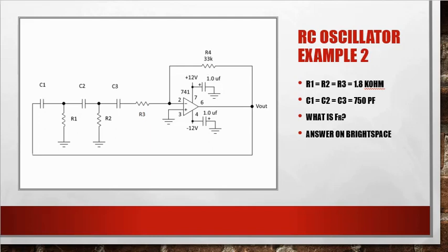RC oscillator example number two. R1 equals R2, R3, and they're equal to 1.8k ohms. C1 equals C2 equals C3, and that's equal to 750 picofarad. What is the frequency of resonance for the circuit? The answer is again on Brightspace. It'll be in the content section under the theory, and it's called the oscillator example answers.